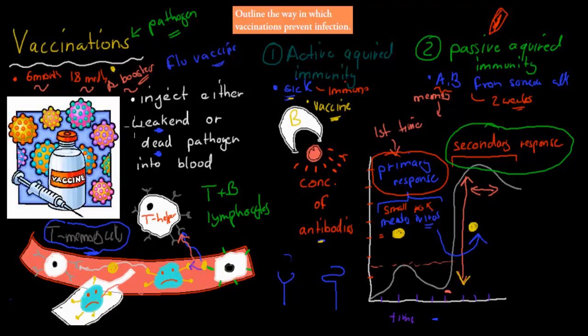If we only do it once, we might have an increase in T and B memory cells, but eventually a drop. By having these booster injections, we're training our body to keep those levels high, because the actual infection could come back at any time. That's how it protects us and ensures we stay immune.